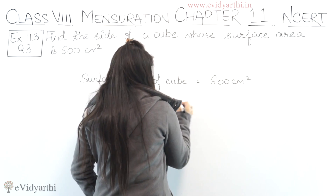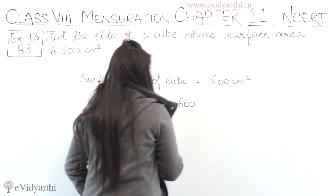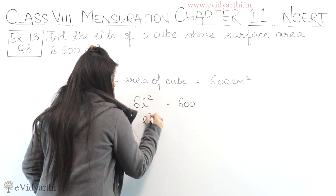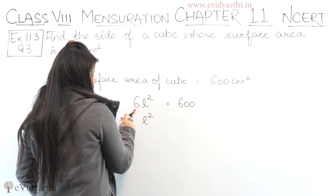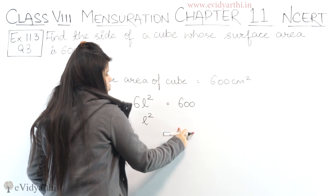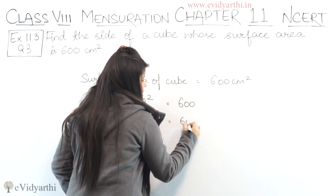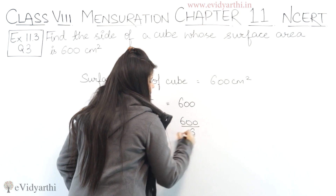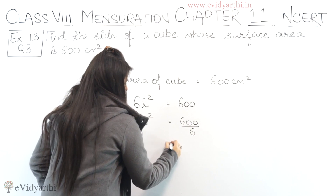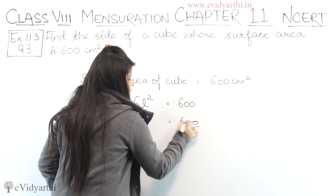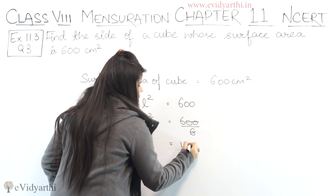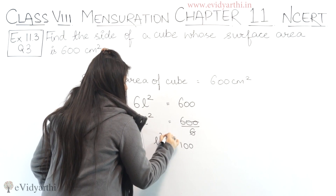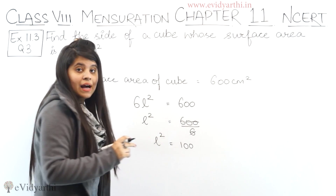So this equals 600, as given. Now L square equals 600 divided by 6. If we cancel it, we get 100. So L square equals 100.